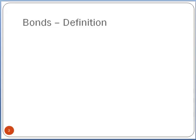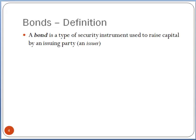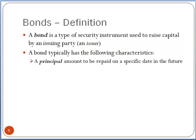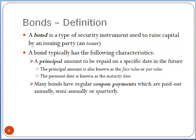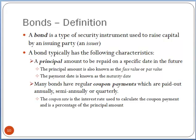Let me start with a basic definition of bonds. We can think of a bond as a type of security instrument used to raise capital by an issuing party or an issuer. A bond typically has the following characteristics: it has a principal amount to be repaid on a specific date in the future, also known as the face value or par value. The payment date is known as the maturity date. Many bonds have regular coupon payments, paid out either annually, semi-annually, or quarterly depending on the nature of the bond. The coupon rate is the interest rate used to calculate the coupon payment and is a percentage of the principal amount. So the coupon payment is simply the coupon rate times the principal.